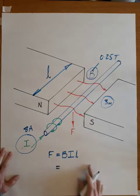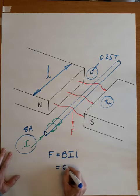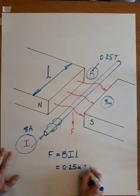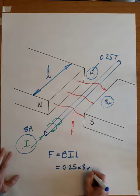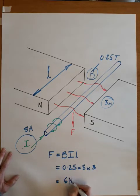Then you literally multiply them together. F equals BIL. So the flux density is 0.25, times the current times 8, times the length which was 3, and that comes to 6 newtons.